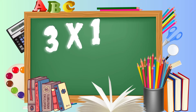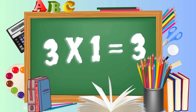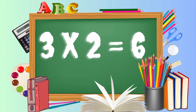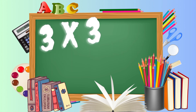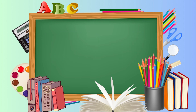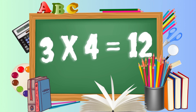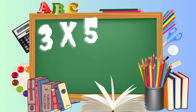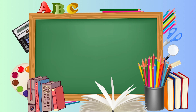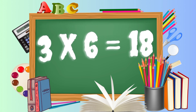Table of three. 3 1's a 3. 3 2's a 6. 3 3's a 9. 3 4's a 12. 3 5's a 15. 3 6's a 18.